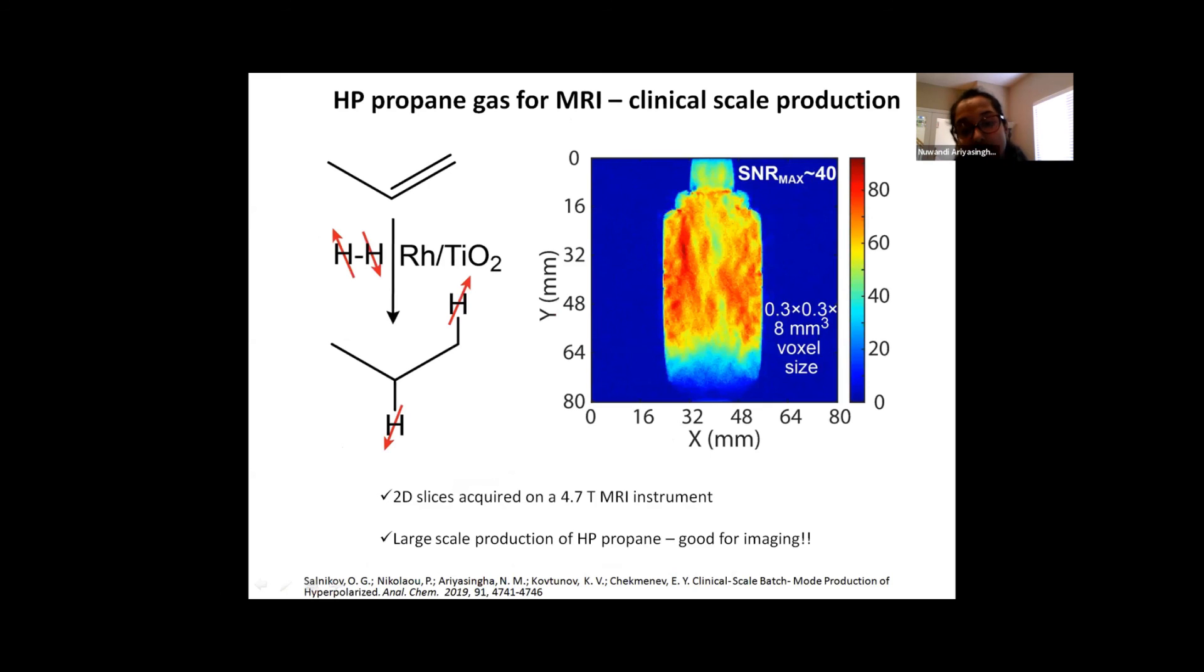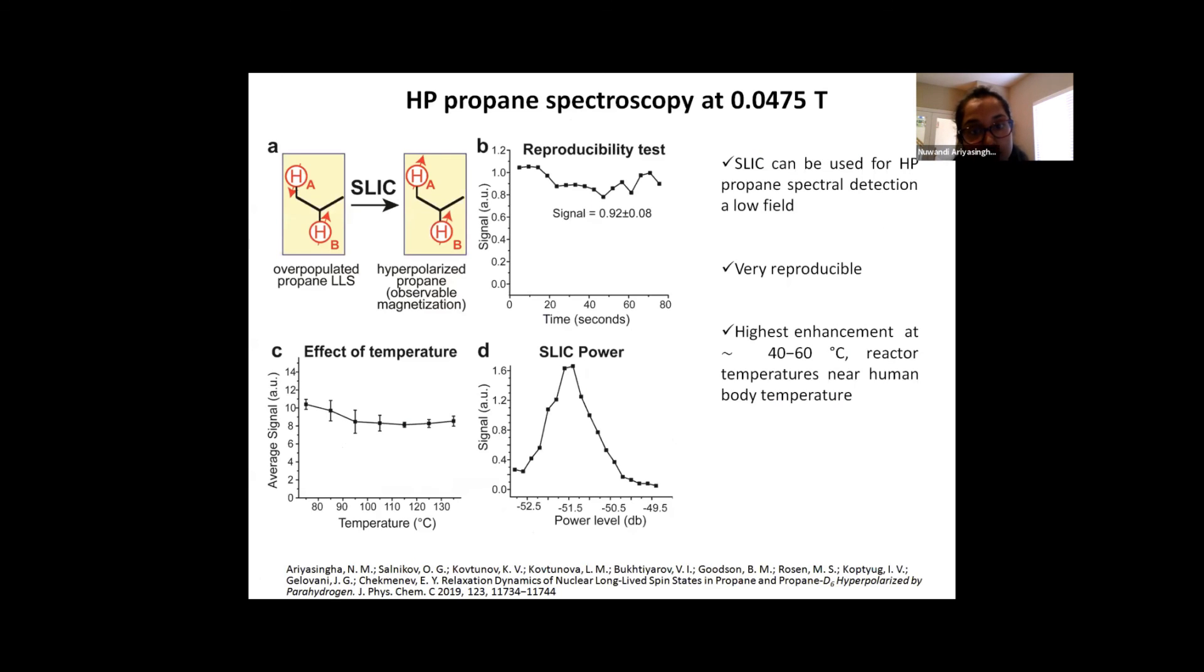So moving on to the spectroscopy at the low field, which is 47.5 millitesla. The major problem that we have when we try to acquire spectrum in this low field regime is that we do not get the anti-phase line behavior as we would expect in the high field, because this is a strongly coupled regime and the lines collapse. So we use a special technique that was explained in detail by Dr. Steven DeVience yesterday, which is called spin lock induced crossing pulses or SLIC pulses, which enables for us to convert the singlet into an observable triplet state. So here we observed a clear maximum of the SLIC pulse towards the signal and the spectra are very reproducible. Thereby we know that SLIC works well for the HP propane detection at the low field.